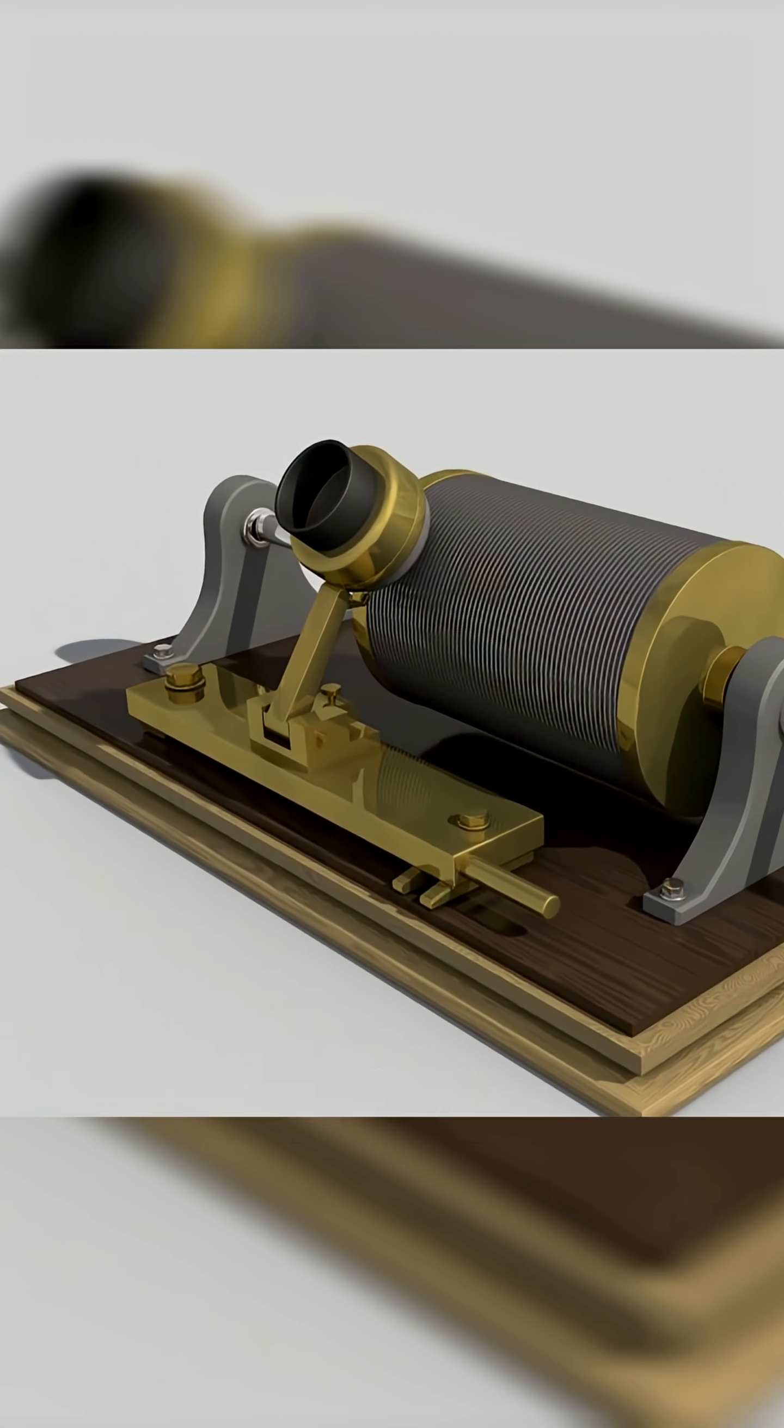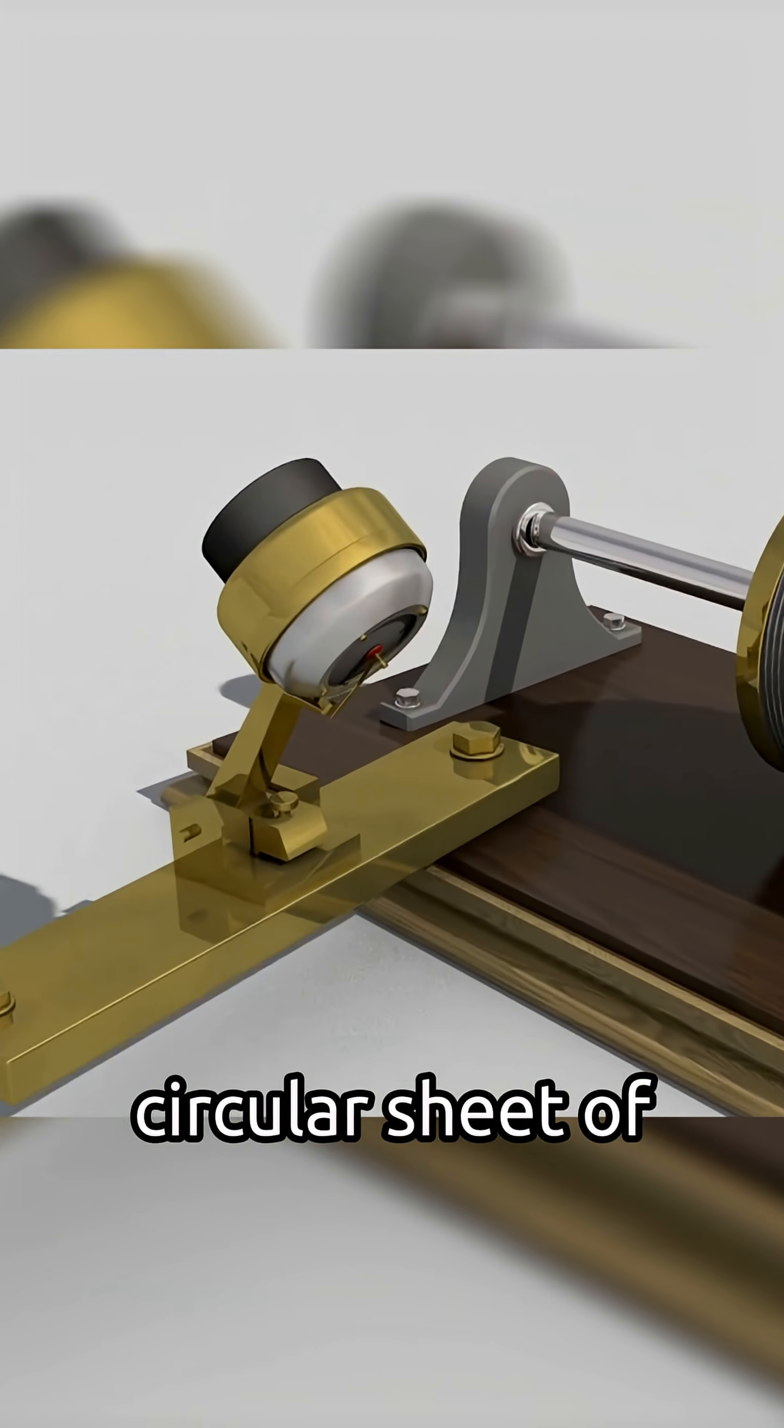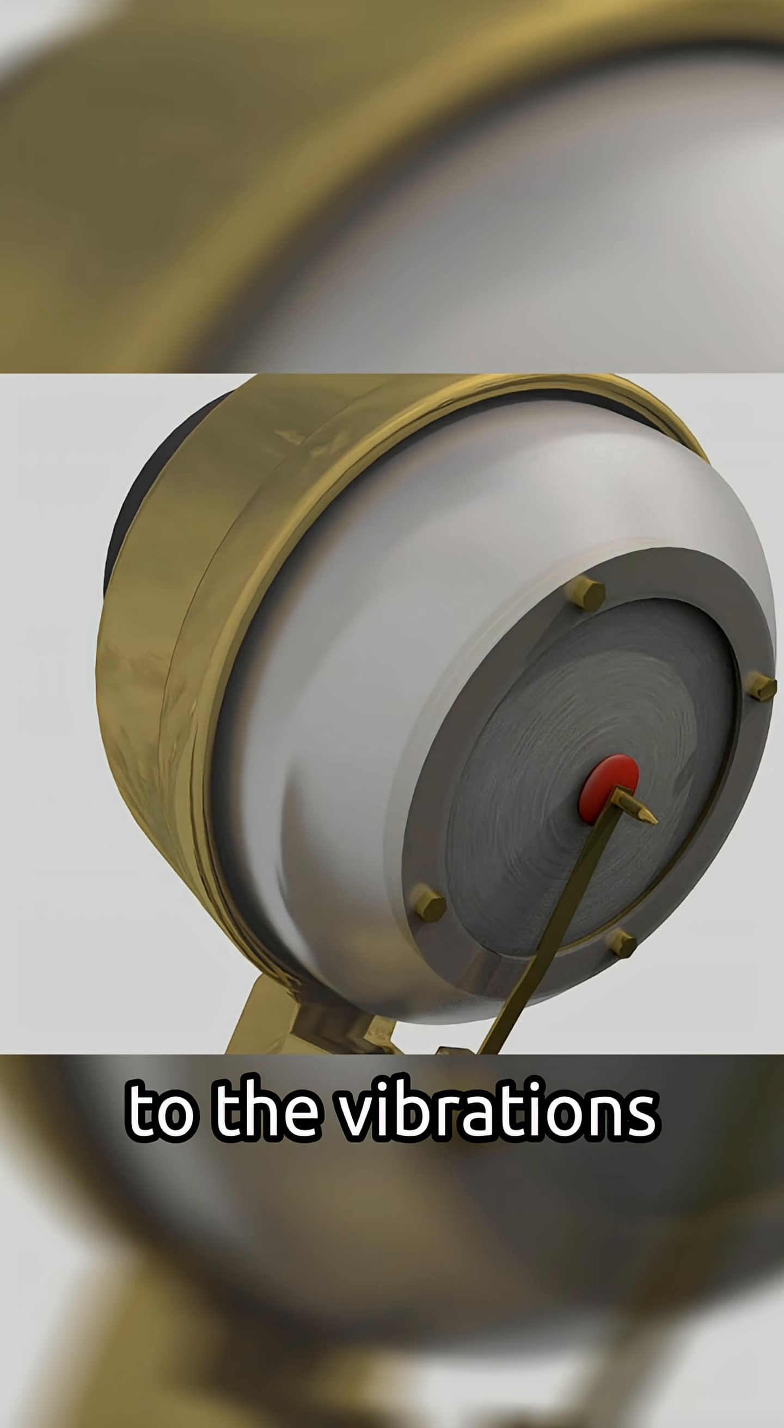We start by getting a microphone. Inside it is a diaphragm, which is a circular sheet of paper that is sensitive to the vibrations in the air.